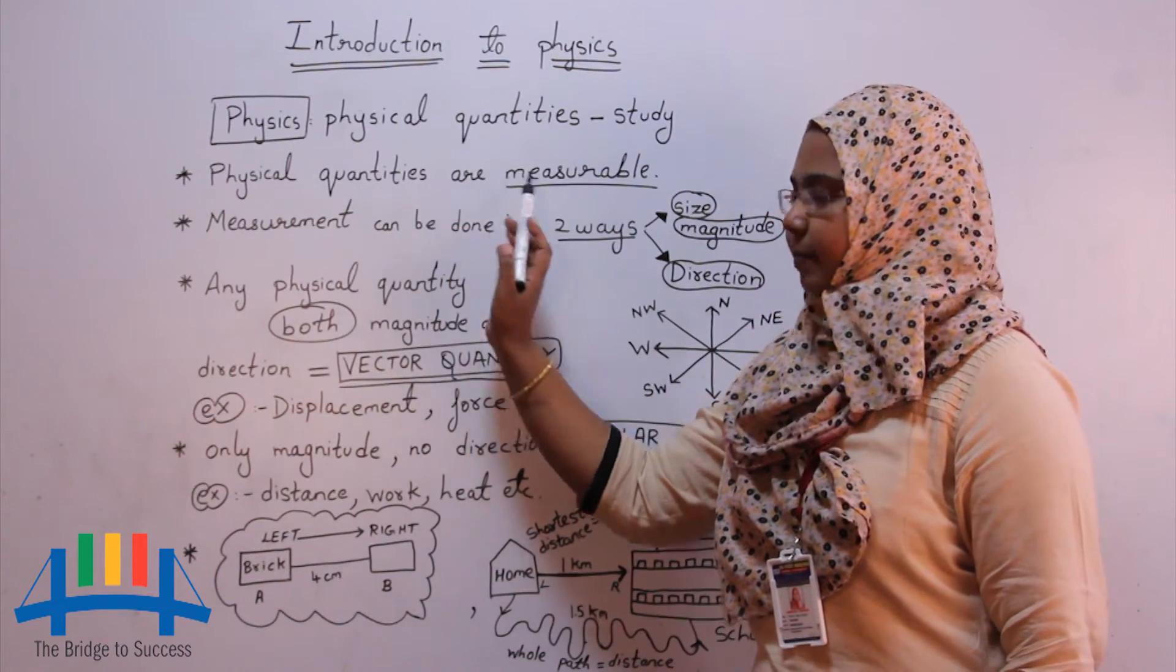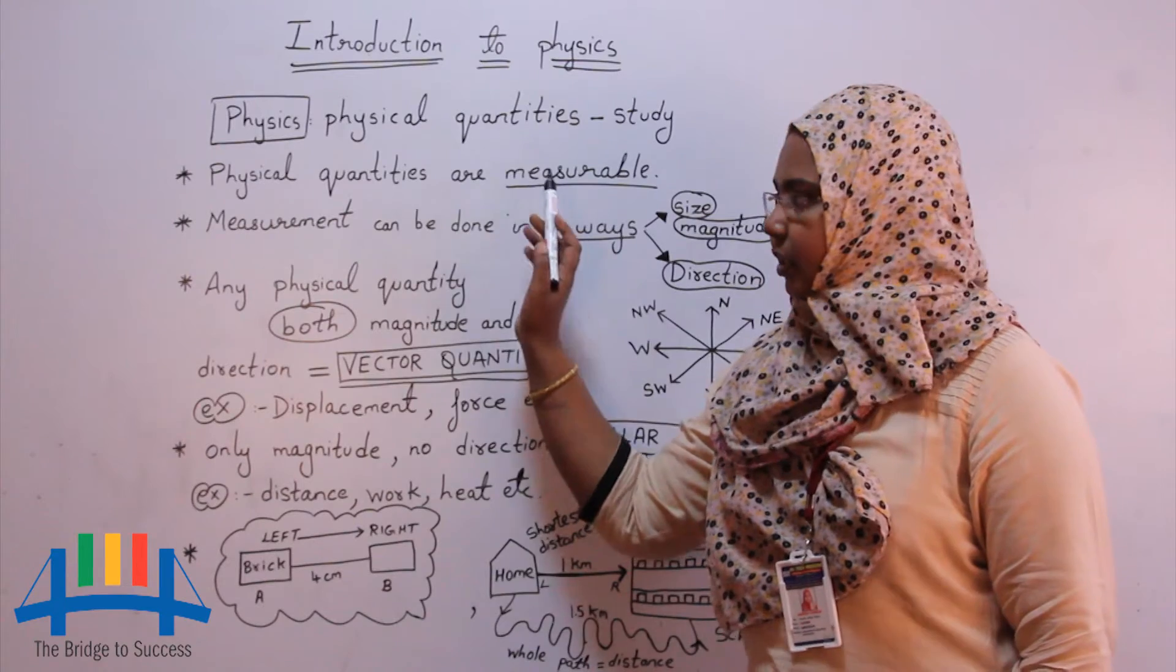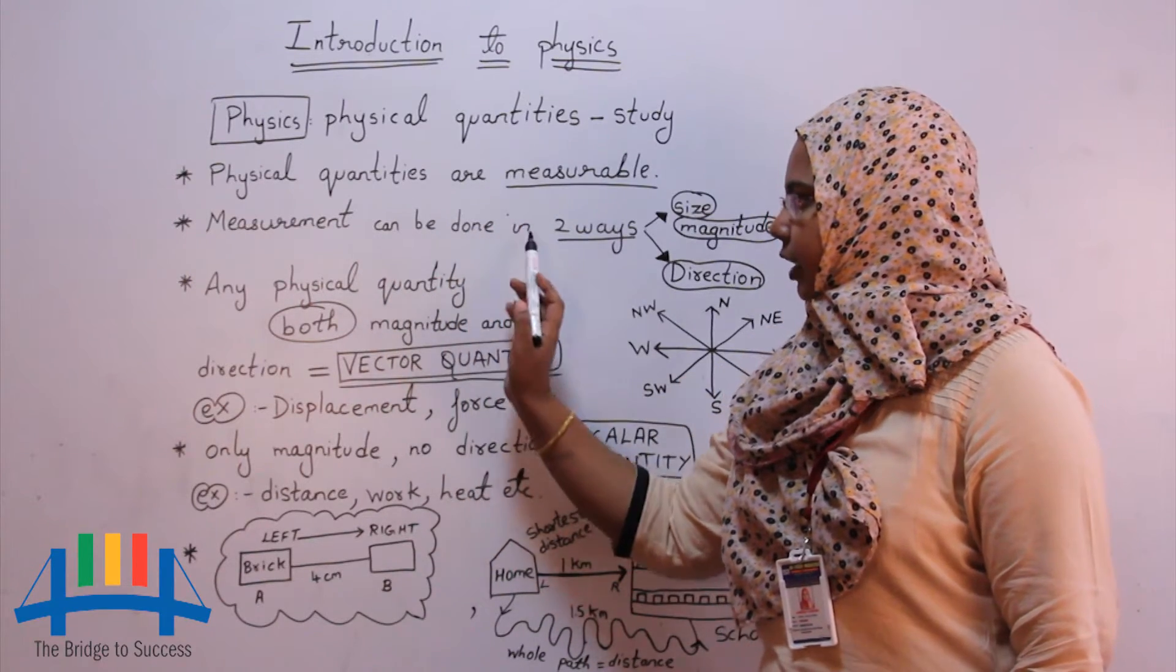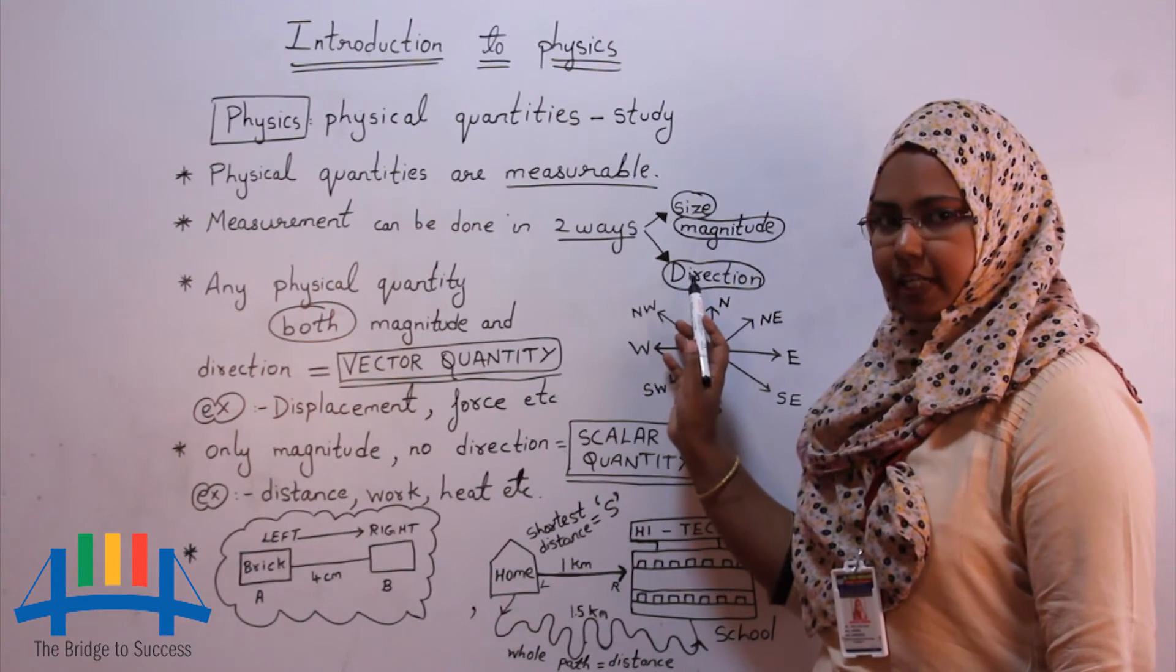Physical quantities are measurable. Measurable means anything which can be measured. The measurement can be done in two ways: size or magnitude, and the second one is direction.